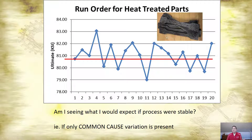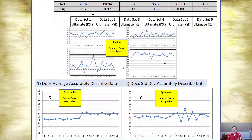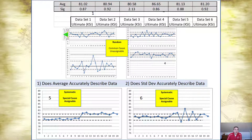For instance, here's the heat-treated parts and their ultimate strength. I look — do they look like they're just bouncing up and down about the average? They do. Am I seeing what I would expect? I don't see anything weird — I would say that data is valid. Looking at all these graphs, they all appear random, just common cause. I don't see anything strange. One graph is bouncing more, but that just means it has a higher standard deviation.